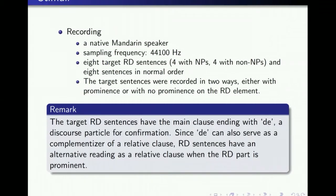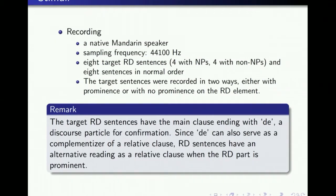Eight target RD sentences — four with NPs and four with non-NPs — and eight sentences in normal order were recorded at normal speech rate by a native Mandarin speaker with a sampling frequency of 44,100 Hz. All target RD sentences have the main clause ending with a discourse particle for confirmation. Since this particle can also serve as a complementizer of a relative clause, RD sentences have an alternative reading as a relative clause when the RD part is prominent. Therefore, the target RD sentences were recorded in two ways, either with prominence or with no prominence on the RD element. Sentences in normal order were taken as both filler and anchor stimuli.